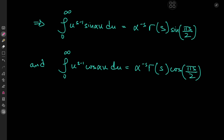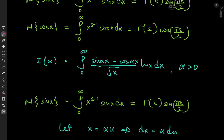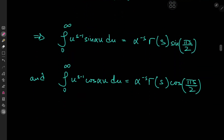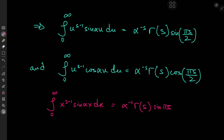Now that we have these transformed integrals, our next step is to recover a logarithm function, because the target integral has a logarithm in it. We can recover the logarithm quite easily: if we differentiate partially with respect to s, we get exactly the same integrand multiplied by the logarithm of x. So we take the integral from 0 to infinity of x to the s minus 1 times sine(alpha*x) dx, which equals alpha to the negative s times gamma(s) times sine(pi*s/2), and differentiate with respect to s.